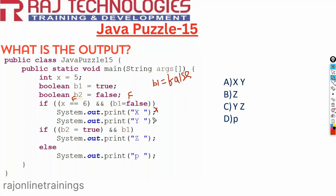But what about the next statement? Does it belong to the if block? If there is no curly brace, it is going to consider only one statement. So the highlighted line is not part of the if block — it's going to execute and print y.